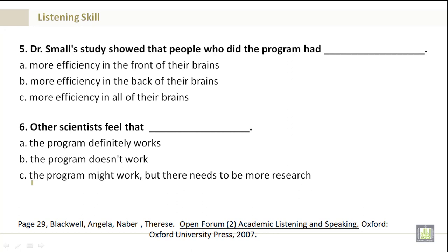Number 5. Dr. Small's study showed that people who did the program had: A. More efficiency in the front of their brains. B. More efficiency in the back of their brains. Or C. More efficiency in all parts of their brain.